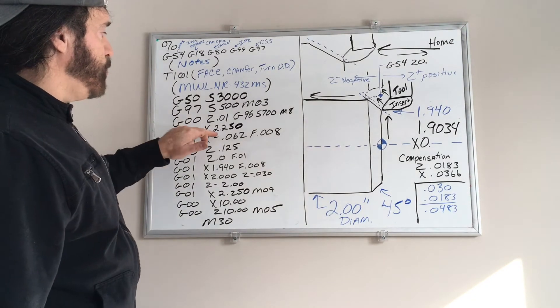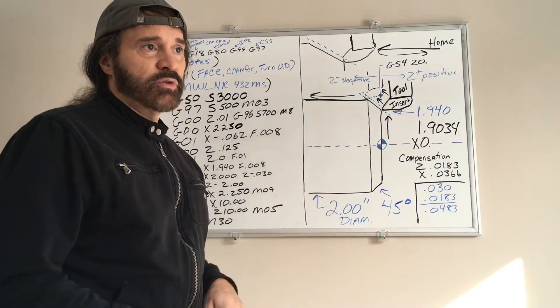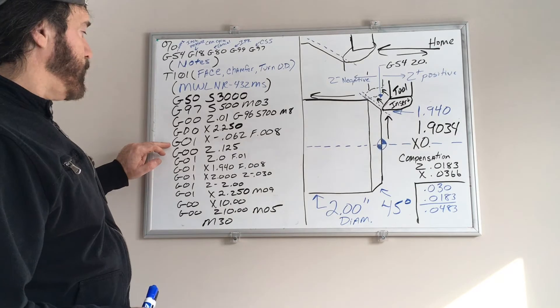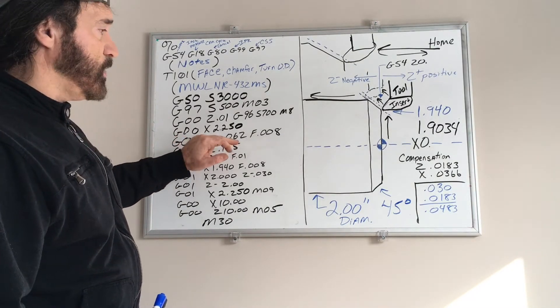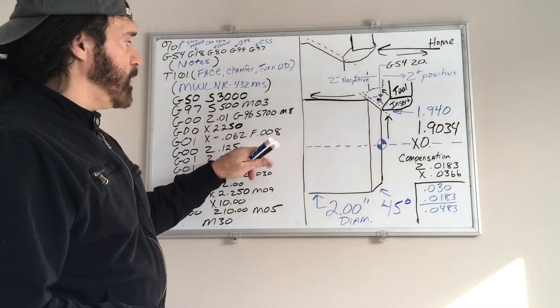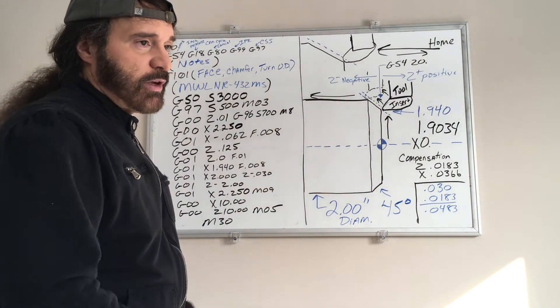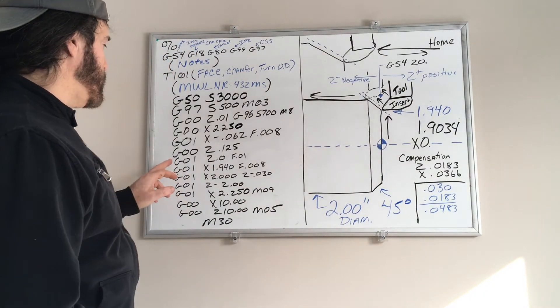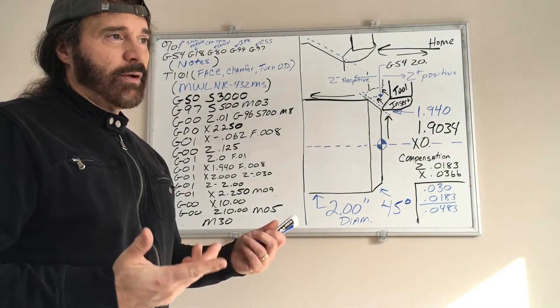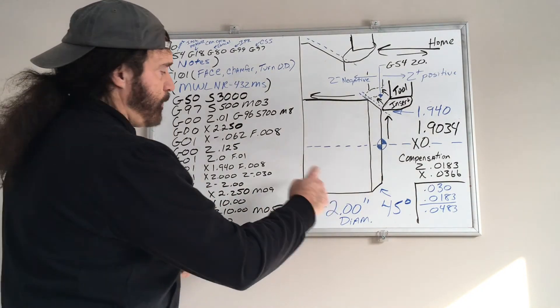Now I'm going to rapid down to X2.250. In this example I'm going to say this stock was 2.125. Now we're going to do a feed move. We're going to feed X negative .062 because we're going past center line, and that was explained in the previous video why you do that, at a feed rate of .008 per revolution. We're going to rapid one eighth in front of the part. Do you have to go that far? Not really. When I'm setting up cutter comp I like to be safe. So now we're going to feed to Z0.